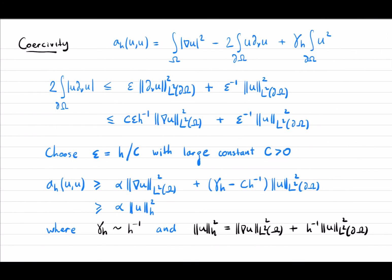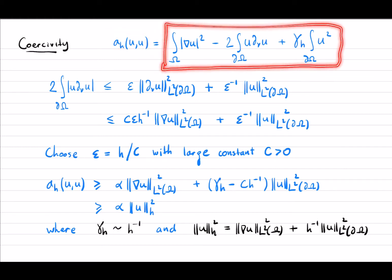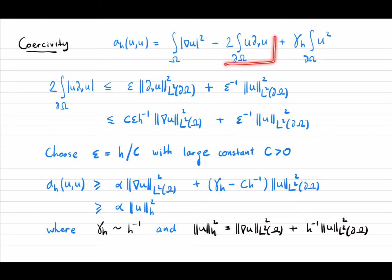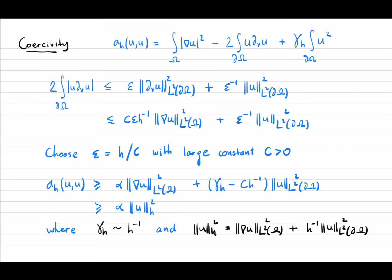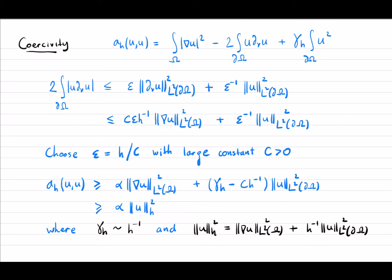Let's look at coercivity first. If you substitute u in place of v, then a_h(u,u) will have this form. There is one potentially negative term, so we want to bound that term. We use Young's inequality to bound it with some arbitrary positive epsilon, with the L2 norm squared of the normal derivative of u over the boundary and the L2 norm of u squared over the boundary — with a negative power of epsilon. Then we can use the inverse inequality of the type that bounds norms on the boundary by norms on the interior.